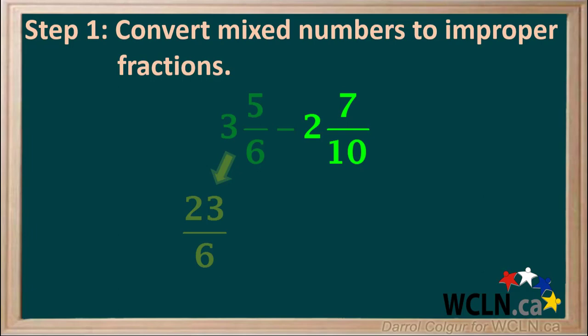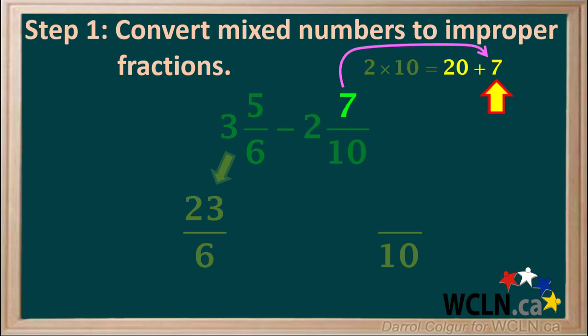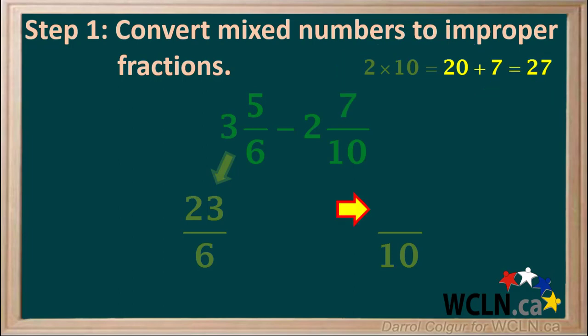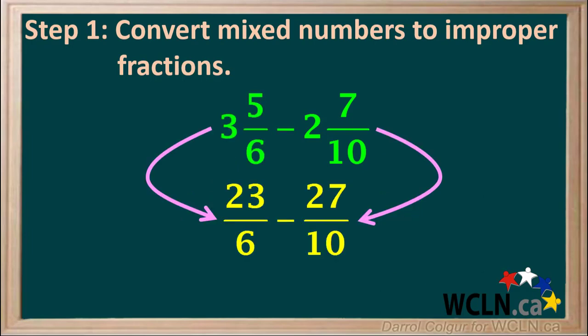Now we convert the other mixed number, 2 and 7 tenths, to an improper fraction. The denominator of our fraction is 10. To find the numerator, we go 2 times 10 equals 20. Then we add the numerator 7, which gives us 27. So now we've converted the mixed number 2 and 7 tenths to the improper fraction 27 tenths. So 3 and 5 sixths minus 2 and 7 tenths has now been converted to 23 sixths minus 27 tenths.